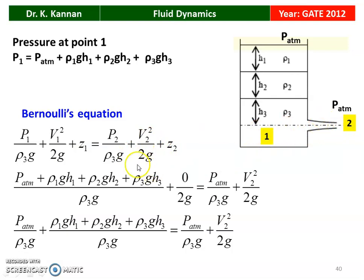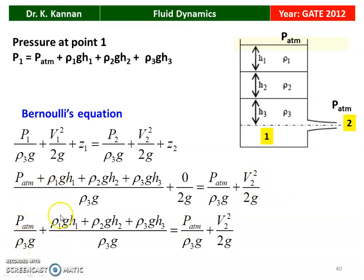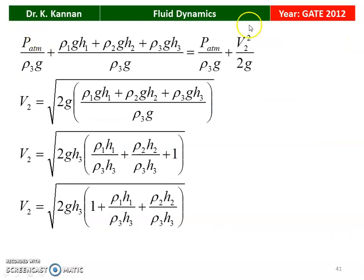Since points 1 and 2 are horizontal, Z1 = Z2 cancels. Substituting P1: [P_atm + ρ1·G·H1 + ρ2·G·H2 + ρ3·G·H3]/(ρ3·G) + 0 = P_atm/(ρ3·G) + V2²/(2G). The P_atm/(ρ3·G) terms cancel on both sides. Finally: V2 = √[2G·(ρ1·G·H1 + ρ2·G·H2 + ρ3·G·H3)/(ρ3·G)].